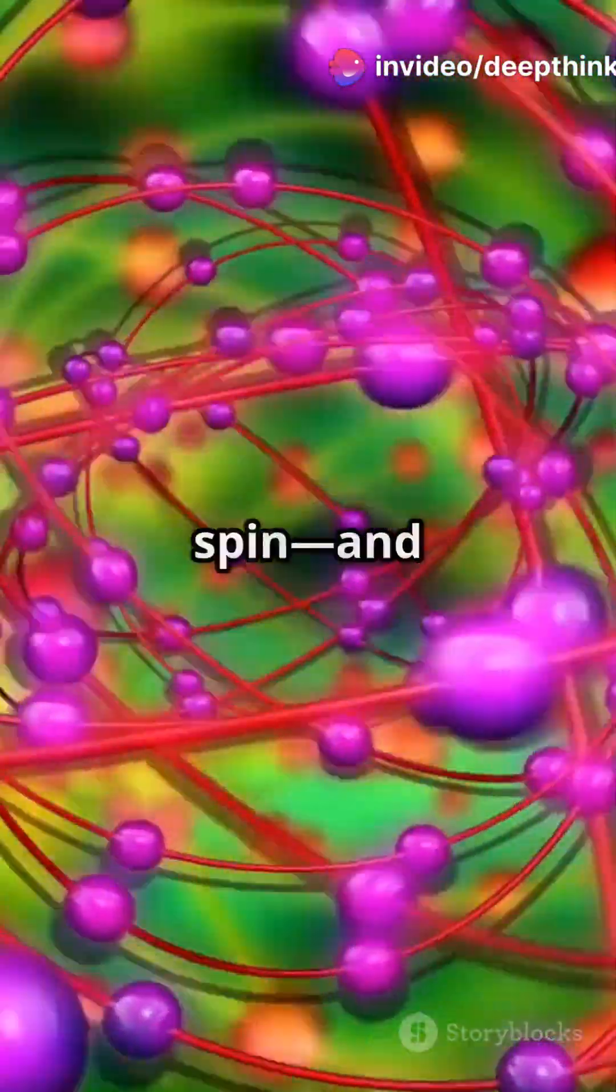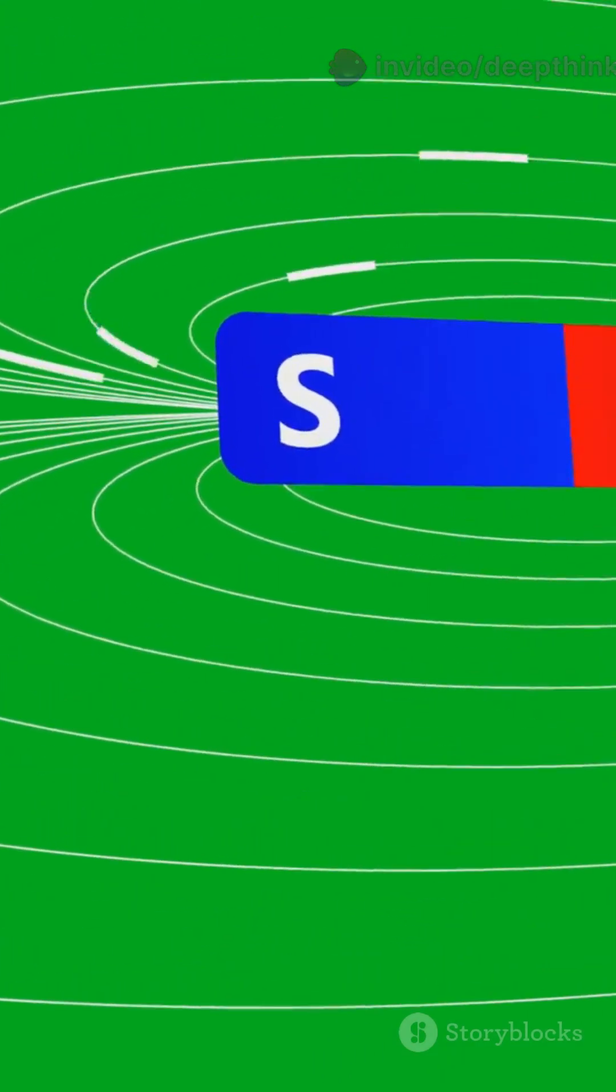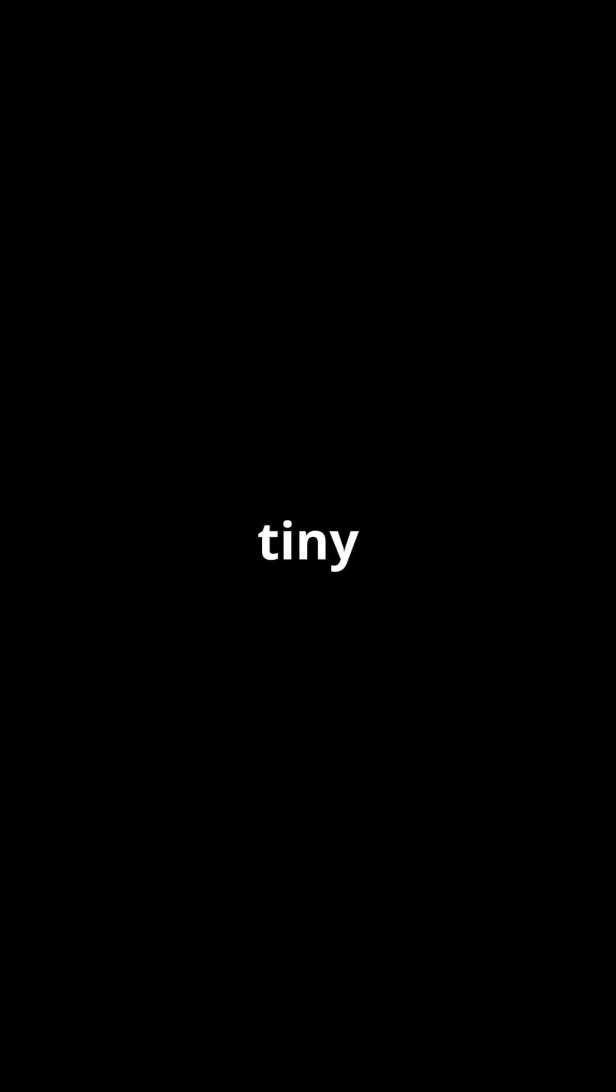Electrons have a property called spin, and it's not just rotation, it's a quantum thing. Think of each electron like a tiny bar magnet.